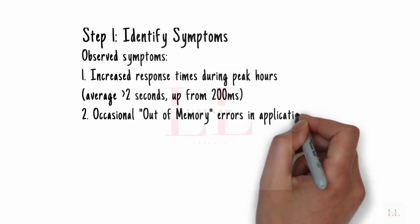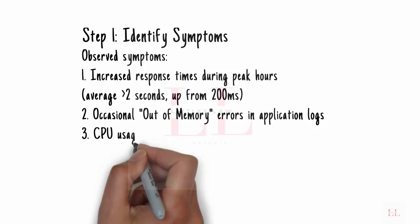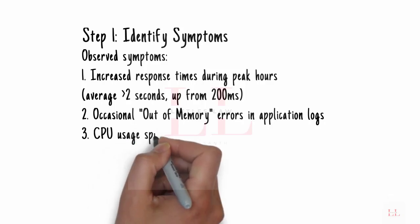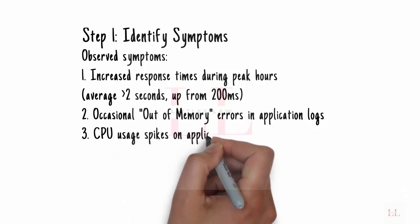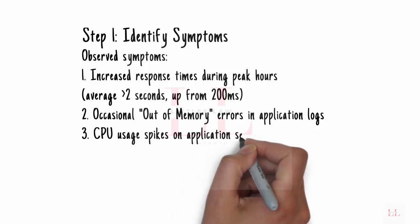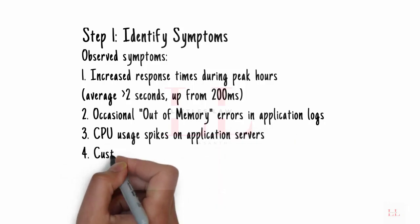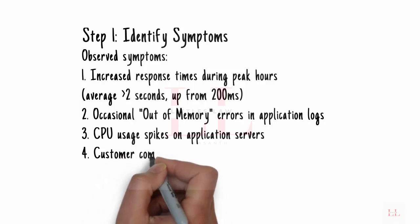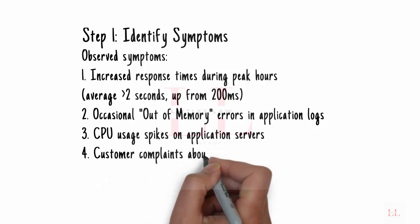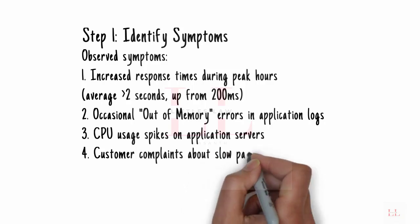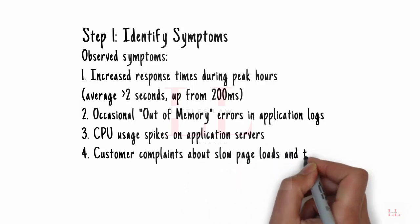The second symptom is occasional out-of-memory errors — a high-complexity, high-impact issue. The application logs show out-of-memory errors, suggesting the application is running out of heap memory. A possible cause is memory leaks, where memory is not properly released, causing a gradual increase in memory usage.